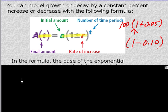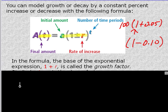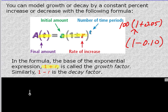In the formula, the base of the exponential expression, 1 + r, is called the growth factor. So this is a growth factor because you're adding. And 1 - r is your decay factor. 1 + r is going to increase the value, 1 - r is going to decrease the value.